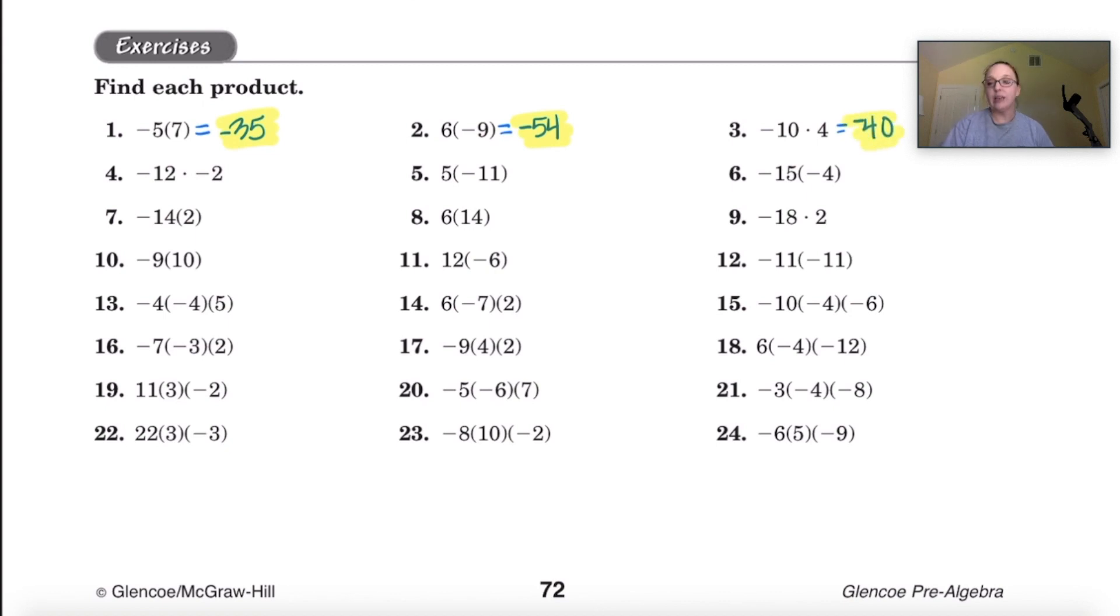Let's try number 4. We have negative 12 times negative 2. Well 12 times 2 is 24. This time their signs are the same so it's going to be positive 24.